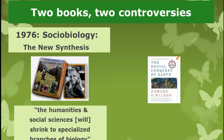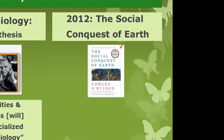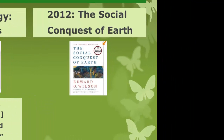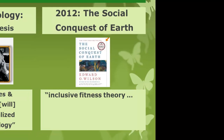More recently, he's published another book — among about 20 books that he's written — called The Social Conquest of Earth, which came out in 2012. It's very much aimed at a general audience. For biologists, the most controversial part of this book is what he has to say about inclusive fitness theory, or Hamilton's Rule.